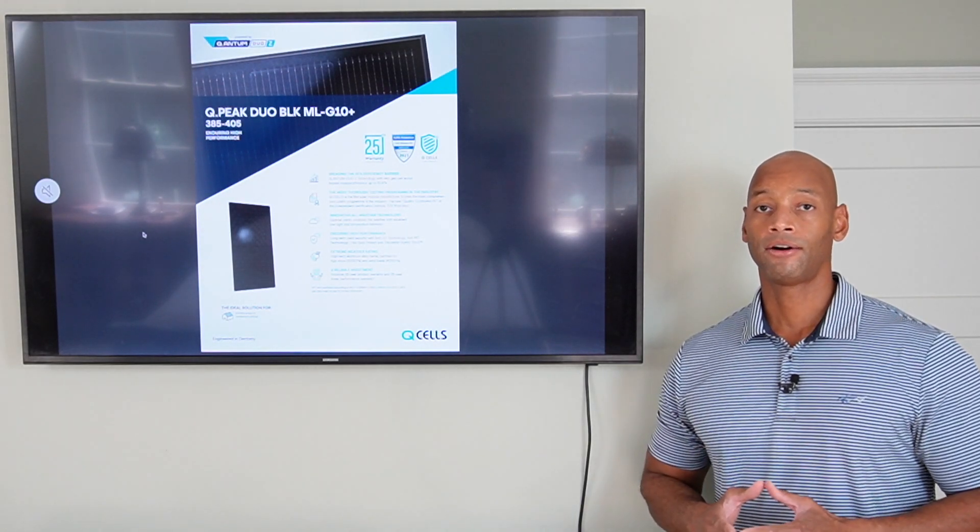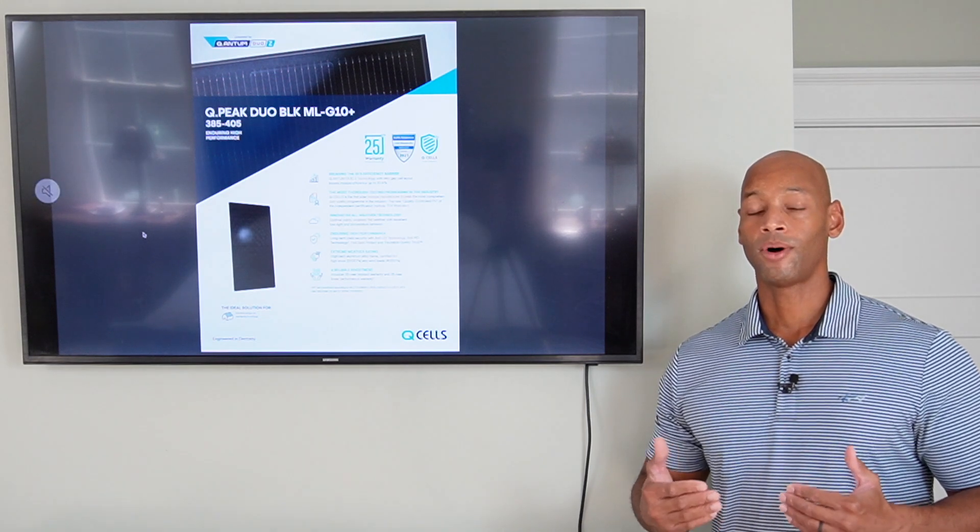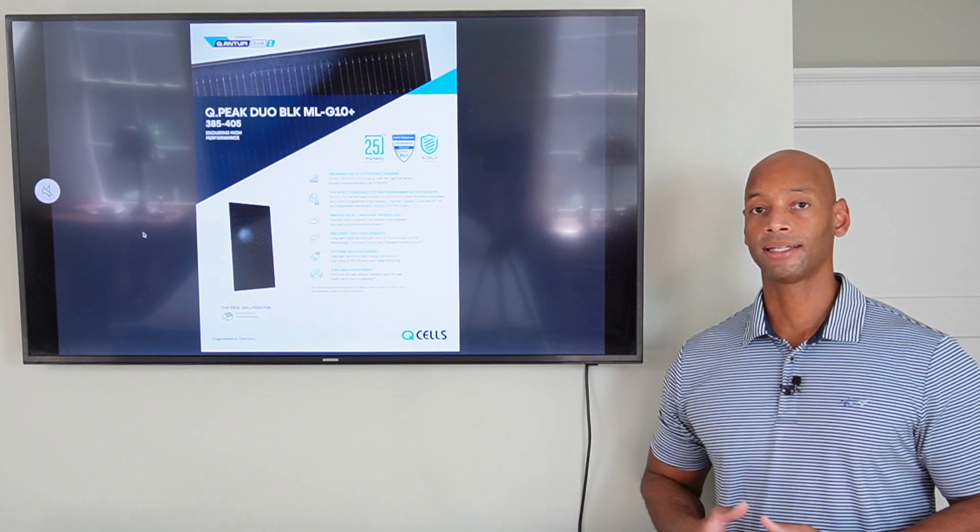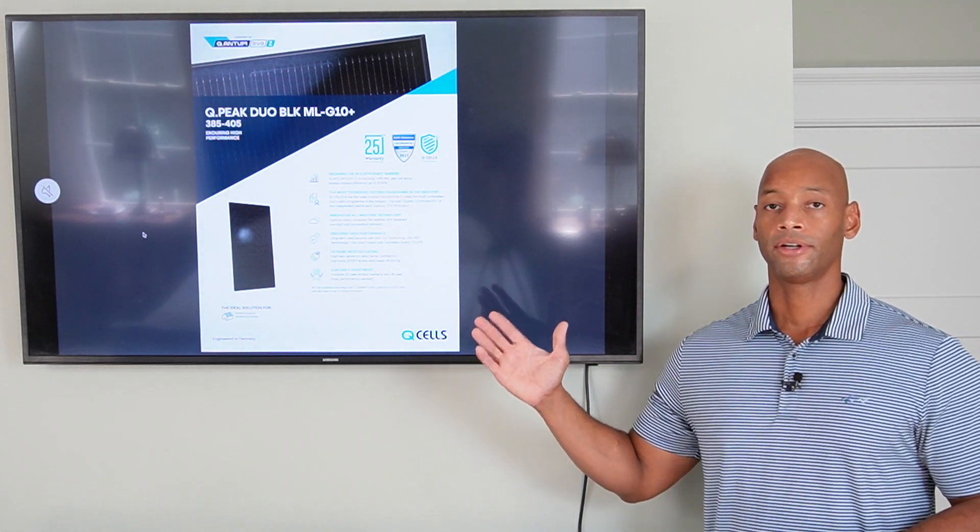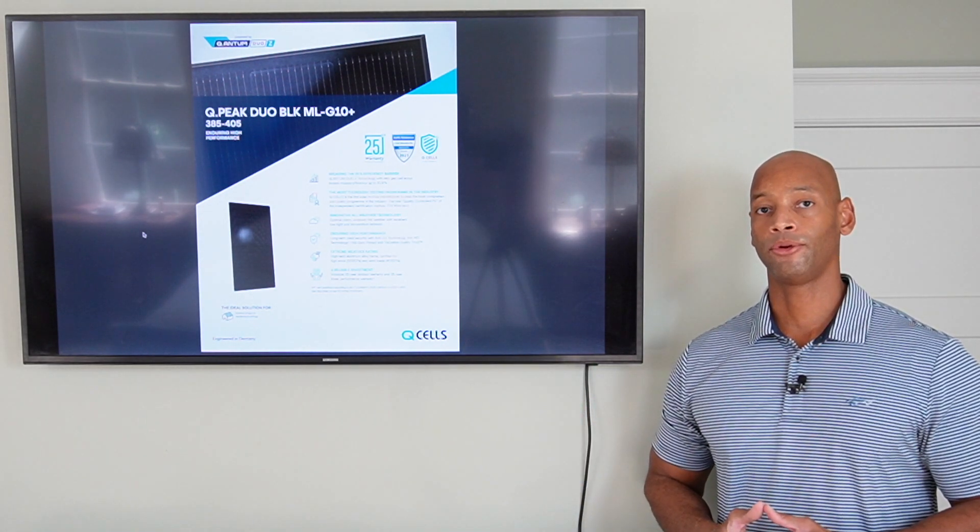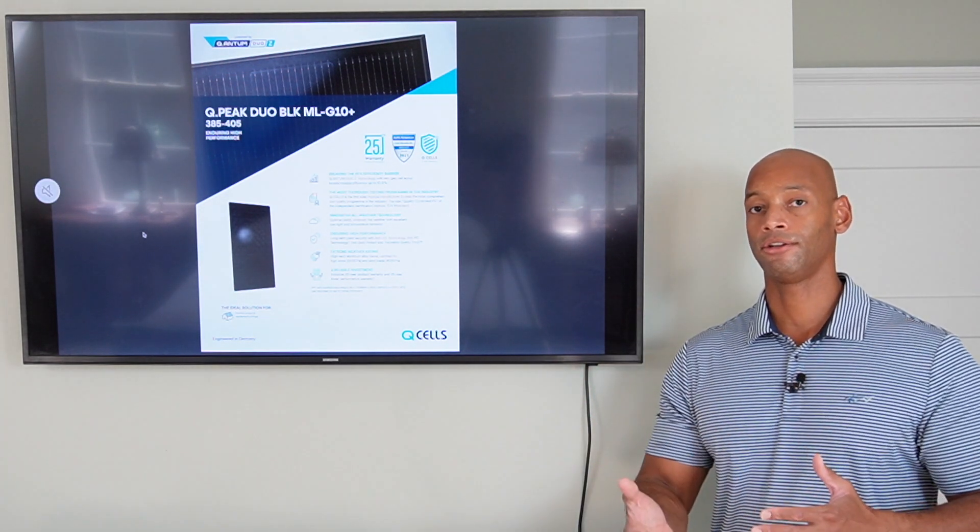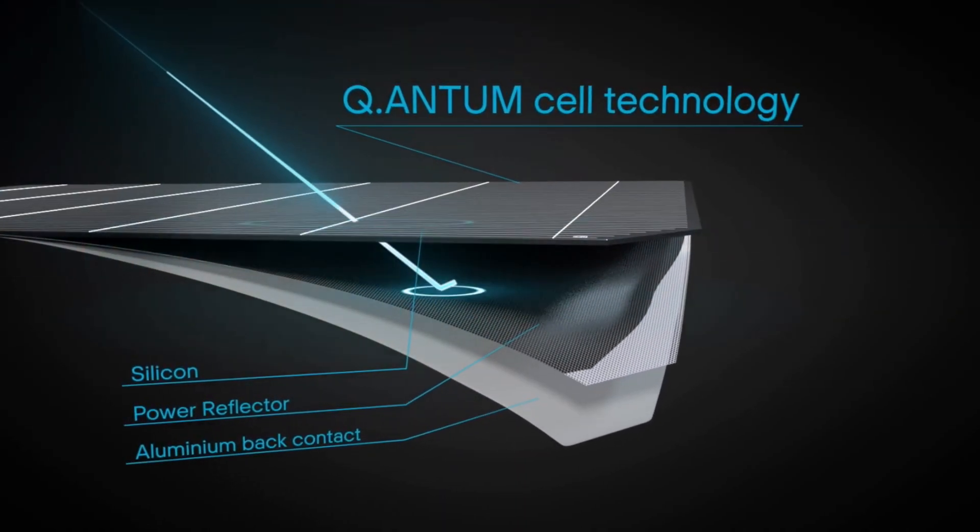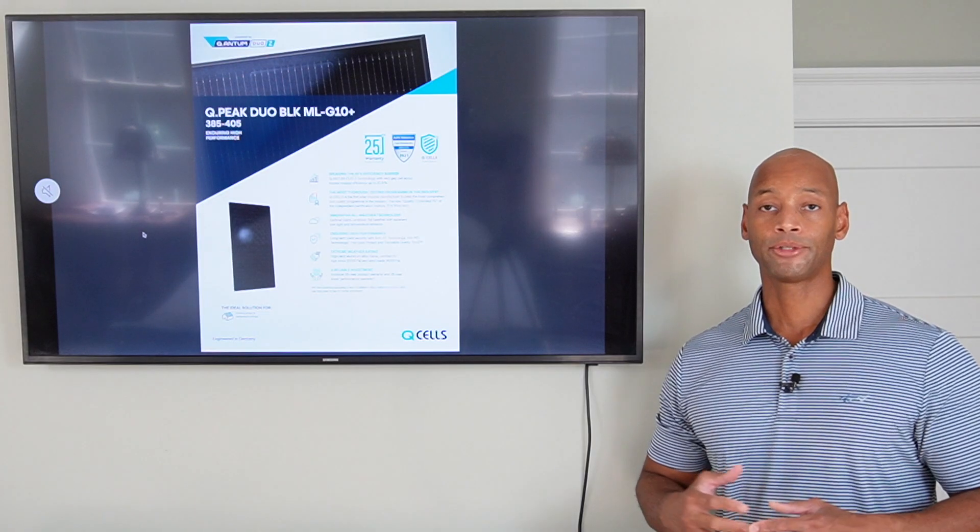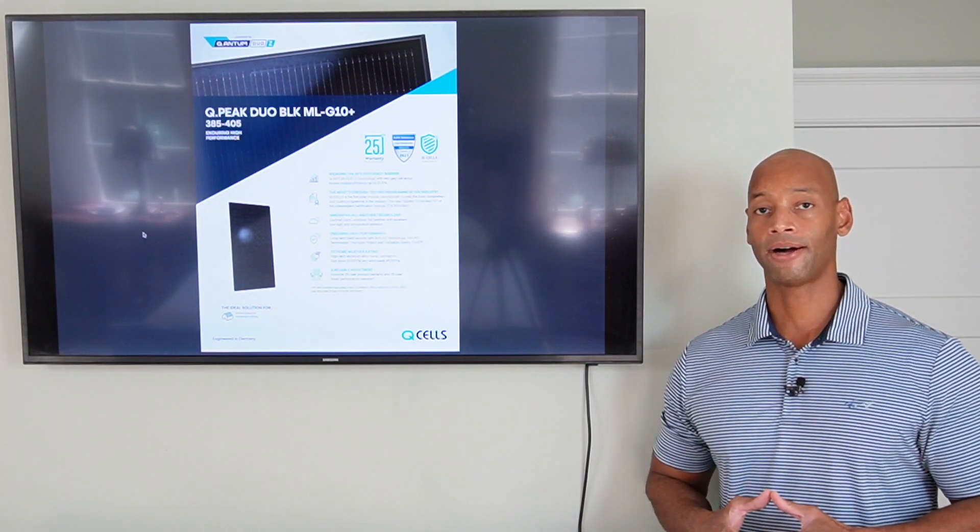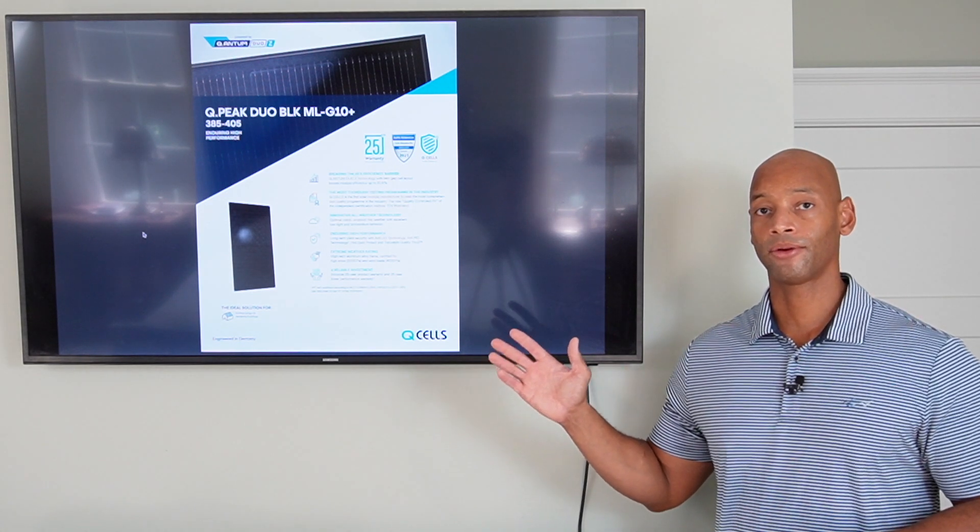The Q-cell G10 also includes the Q-cell's namesake quantum technology. And what the quantum technology refers to is, behind the solar cells, there is a reflective paste that will capture sunlight. Sunlight that normally would have passed straight through the cell and just hit your rooftop. The reflector is able to capture a portion of that and reflect it back out through the front of the cell, capturing about 5% additional power that otherwise would have been lost. So you get the performance benefits of the quantum technology.